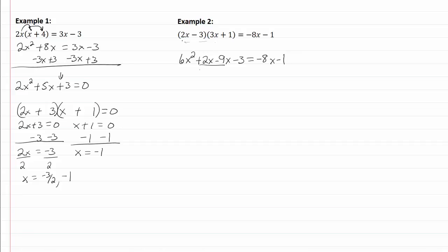Combine my like terms here, I have 6x squared minus 7x minus 3 equals negative 8x minus 1.